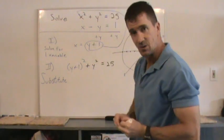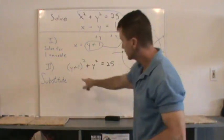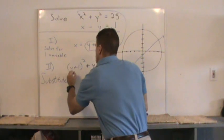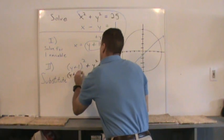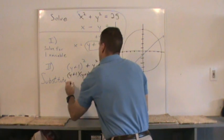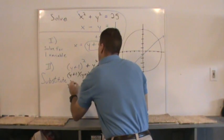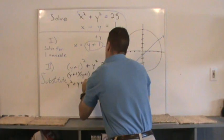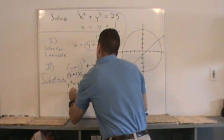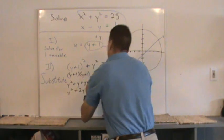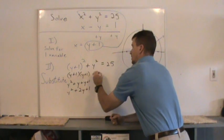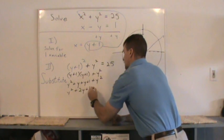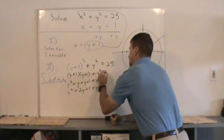Now all we have to do is solve this equation right here. I am going to distribute this. I'm going to FOIL it out. That's y plus 1 into y plus 1. And after I FOIL that, I get y squared plus 1y plus 1y plus 1, which is y squared plus 2y plus 1. Now you still have this plus y squared here.